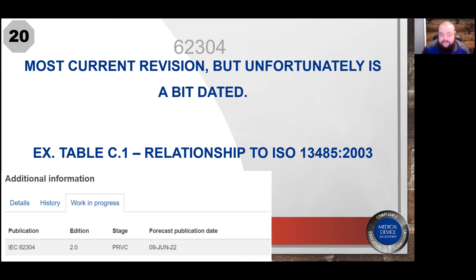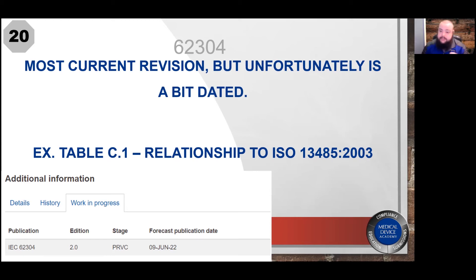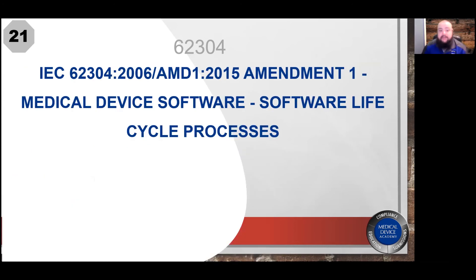The accepted current version of 62304 is the 2006 date revision with the inclusion of the 2015 amendment. Unfortunately it's a little dated — you can see in Table C1 that the relationship to ISO 13485 references the 2003 date revision, whereas 13485 is currently at the 2016 date revision. A second edition of IEC 62304 could be released as soon as June 2022, but for now we have IEC 62304:2006 plus Amendment 1:2015, and the good news is that this has a stability date through 2025.